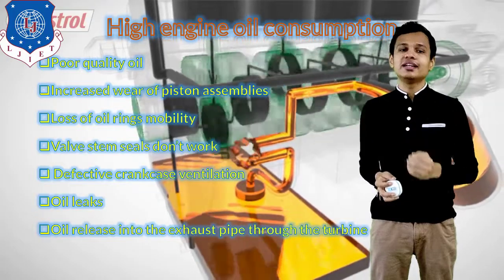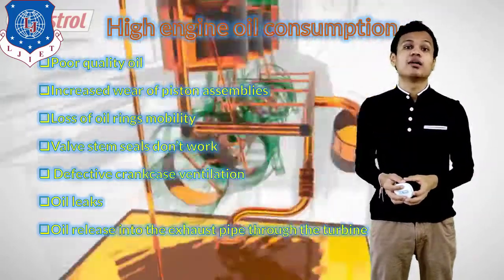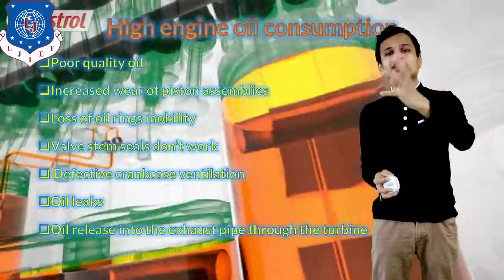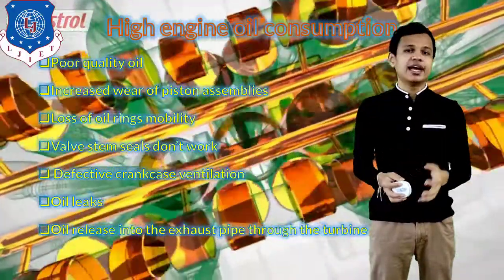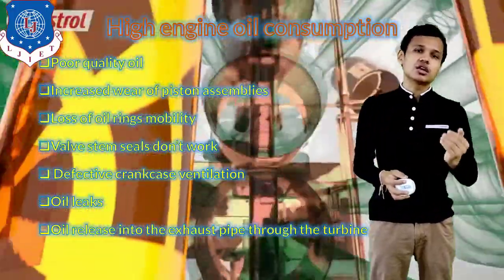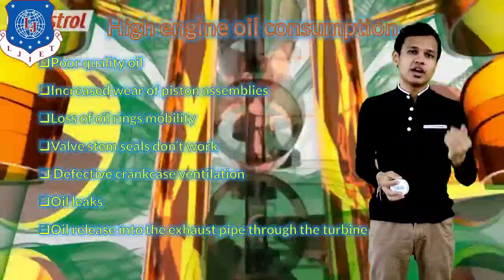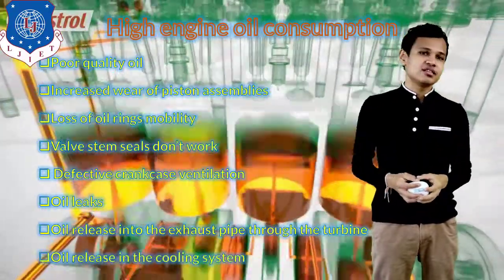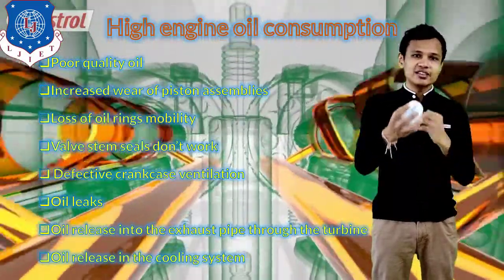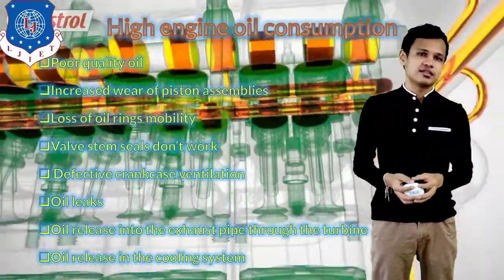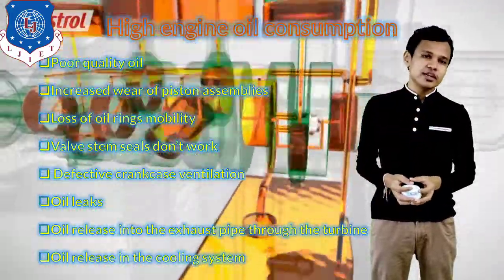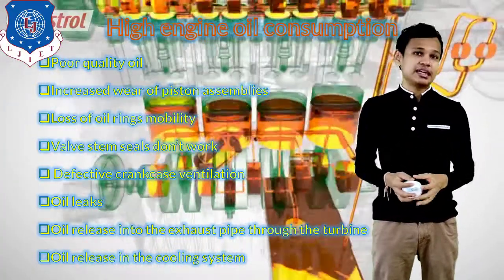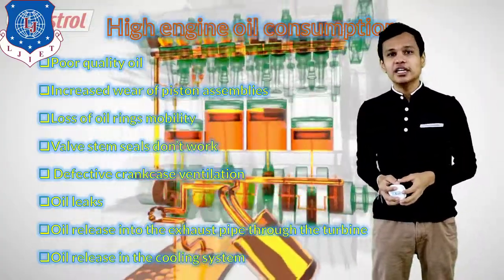Also, if oil is released into the exhaust pipe through the turbine — this is the case of the turbocharger — if oil is getting released from the exhaust pipe through the turbine, that turbine will consume the oil and will eventually damage other components as well. So it should be ensured that oil is not released from the exhaust pipe and should be kept running in the engine. The last cause is oil released into the cooling system. If oil is leaking and getting mixed into the cooling system, that oil will be wasted and will also affect the cooling system. These are the points that can be reasons for high engine oil consumption.